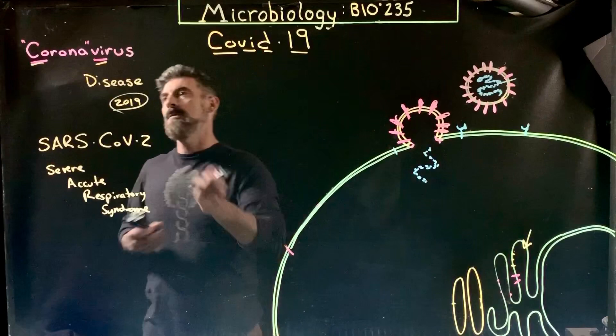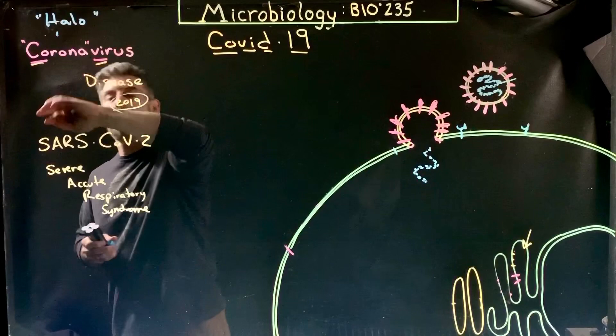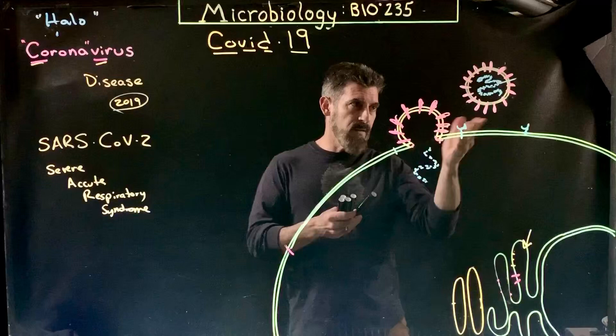Also part of the name: Corona. Corona means halo. You can think of the halo of light around the sun — that's kind of where the name comes from.